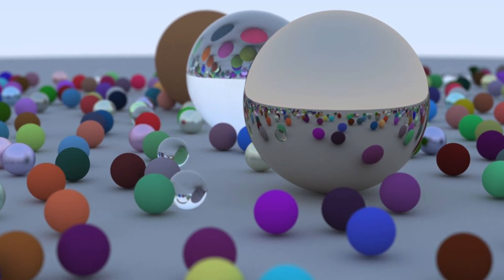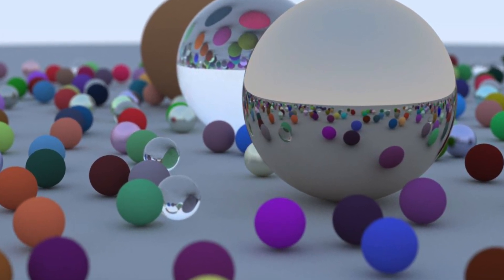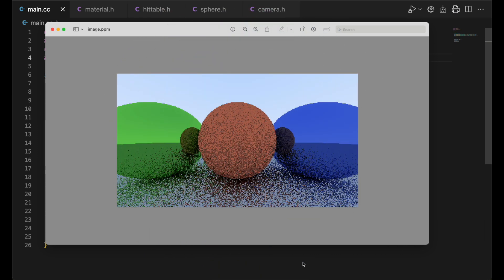Welcome to part 3 of this series. We'll pick up right where we left off, with this beautiful image of diffuse and metallic spheres.